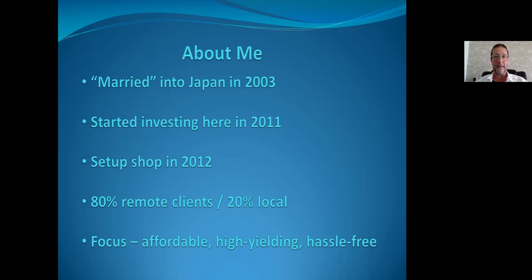They set up a buyers advocacy business — not a real estate agency or property management company — representing clients as their Japanese face in front of third parties: real estate agents, property management companies, building management companies, renovation and repair professionals, and insurance companies. For overseas clients, they also liaise with accountants, handling all data and authority on their behalf.